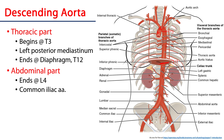That descending part continues through the retroperitoneal space of the abdominal pelvic cavity as the abdominal part, where it eventually bifurcates at approximately the L4 level into the common iliac arteries and the median sacral artery.